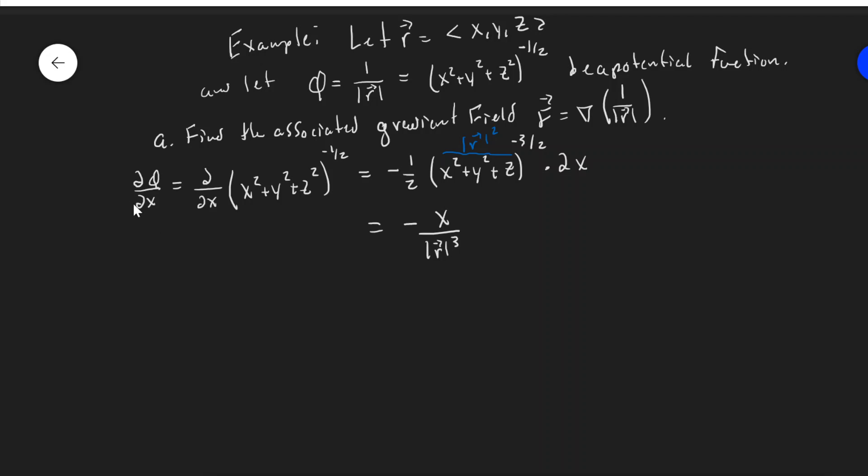And then partial with respect to y, partial with respect to z, these are going to follow the same steps. It'll end up with partial phi partial y is minus y over magnitude R cubed, and partial phi partial z will be similar, negative z, magnitude R cubed.